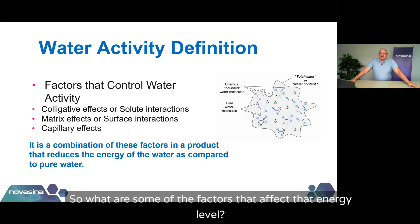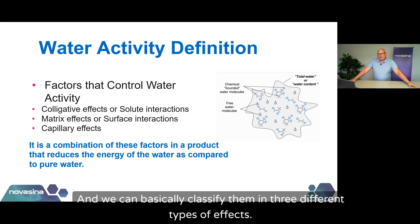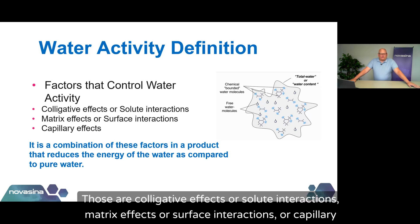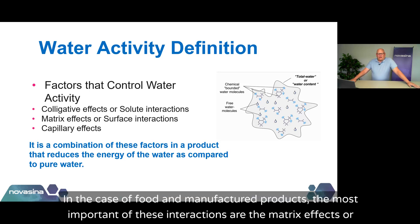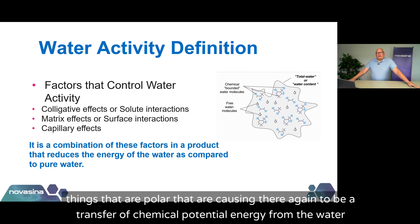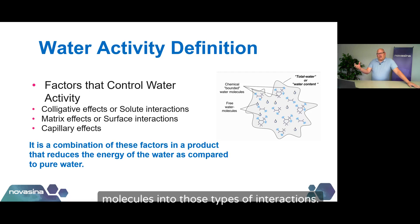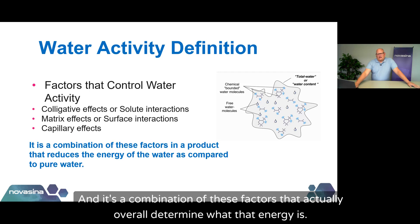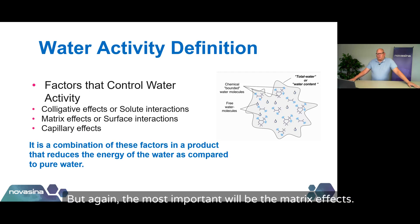What are some of the factors that affect that energy level? We can classify them in three types: colligative effects or solute interactions, matrix effects or surface interactions, and capillary effects. For food and manufactured products, the most important are the matrix effects or surface interactions — things like water interacting with sugar, water interacting with salt, polar materials causing transfer of chemical potential energy from water molecules into those interactions. It's a combination of these factors that determines what that energy is, but the most important will be the matrix effects.